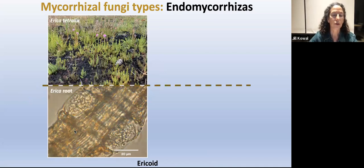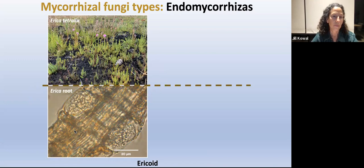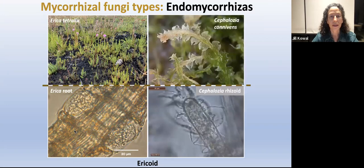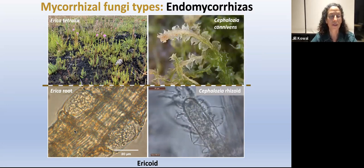Moving on to the ericoid mycorrhizals, which are my area of specialty. Their namesake is Erica tetralix above ground. Below ground, you can see how the epidermal cells are colonized with coils — very distinctive septate hyphae coils of the erica. Interestingly, they're also found in leafy liverworts, which proved very handy for my PhD — these coils appear in both the root and the liverwort rhizoid.